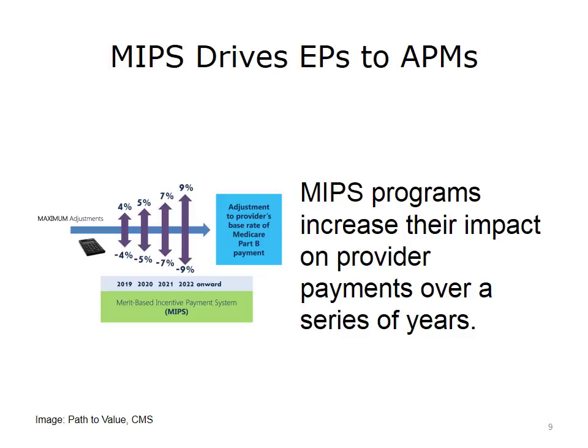Advancing care information focuses on health information exchange, e-prescribing, electronic patient engagement, and other health IT-focused activities. This composite performance score determines the amount of adjustment to a provider's base rate of Medicare Part B payment.